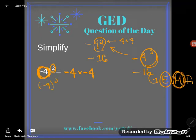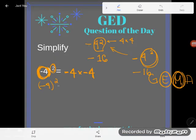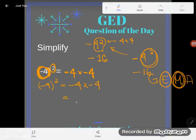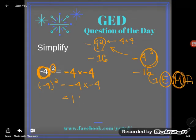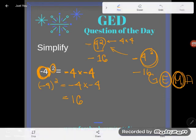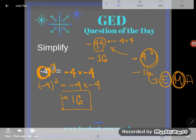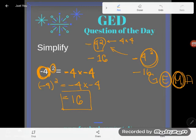But with the parentheses, I've made it a grouping, so I'm squaring that entire grouping. That's why I end up multiplying negative 4 times negative 4. And a negative times a negative is a positive, so in this case I end up with positive 16.